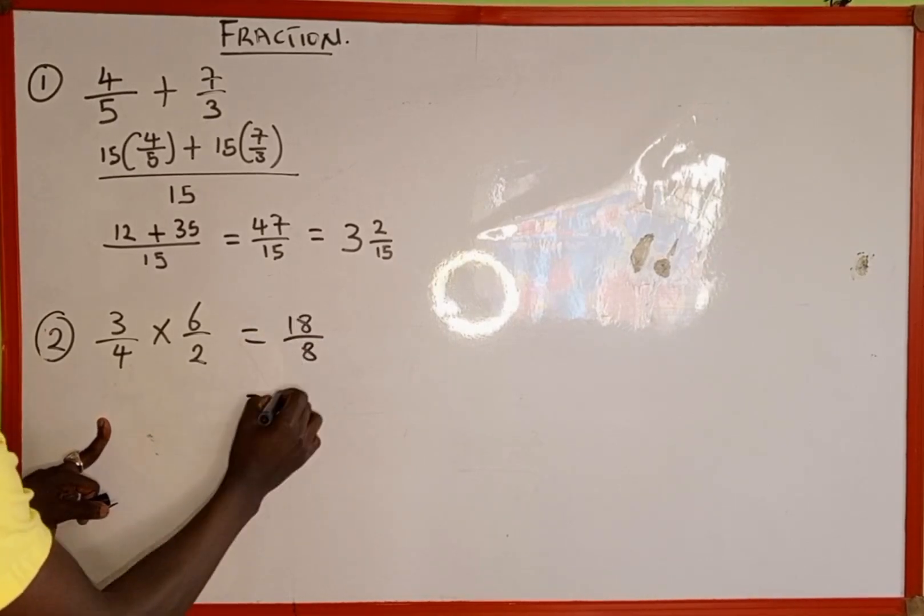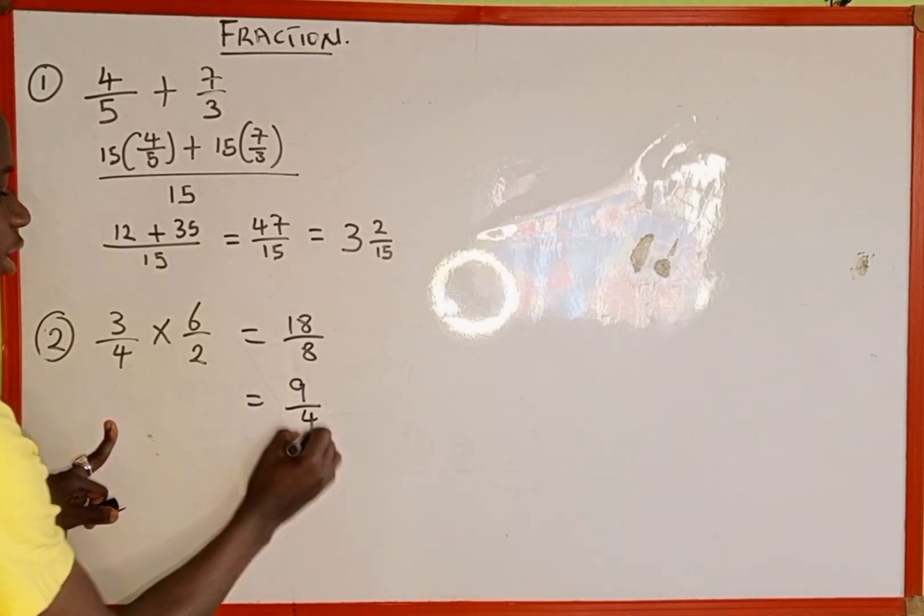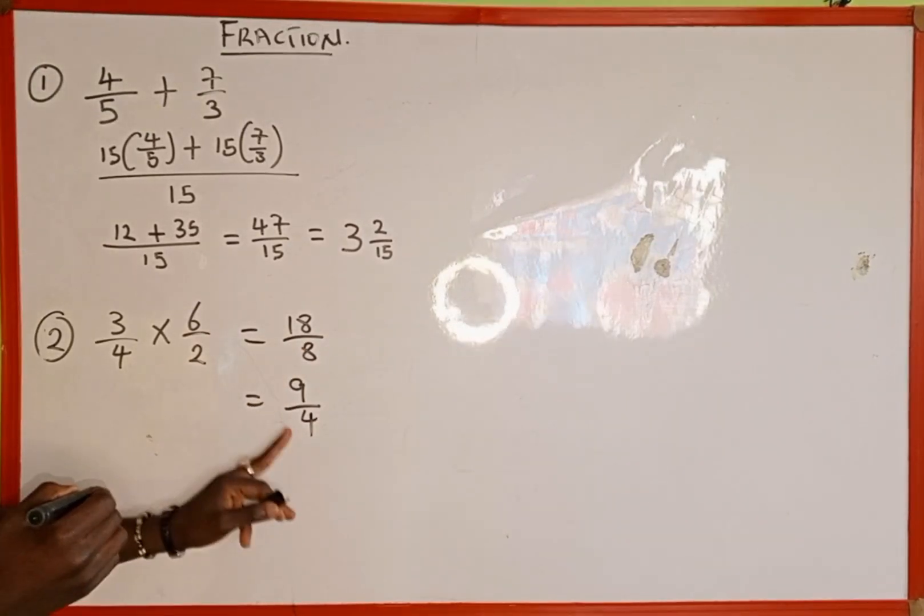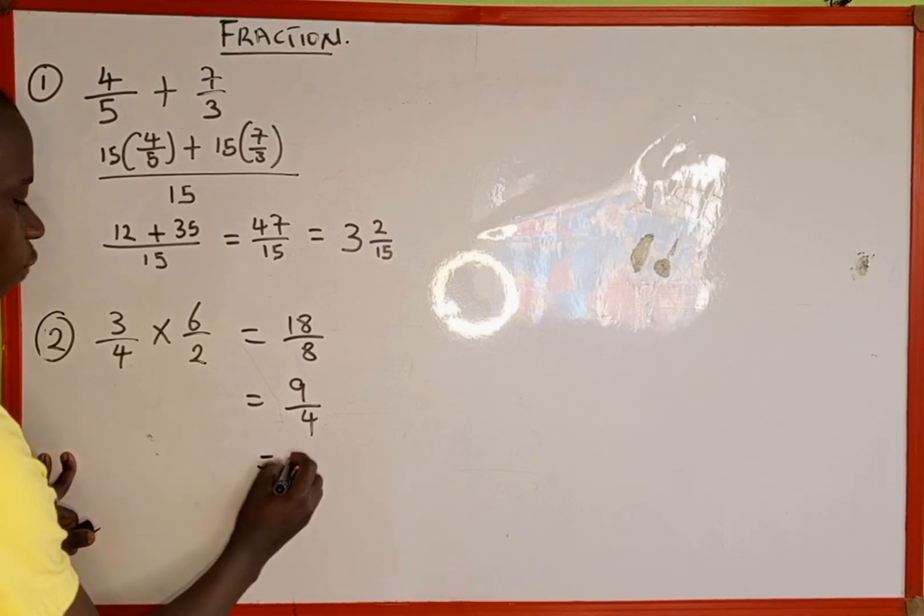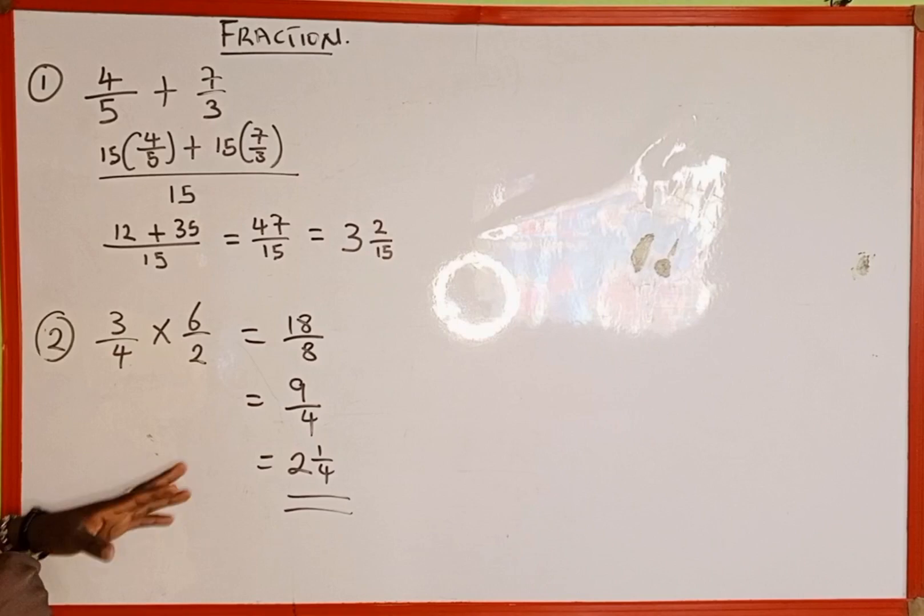And 18 divided by 8: 2 can go into 18 nine times, then 2 can go into 8 four times. Now if you divide 9 by 4, we are going to have 2 whole number 1 over 4.